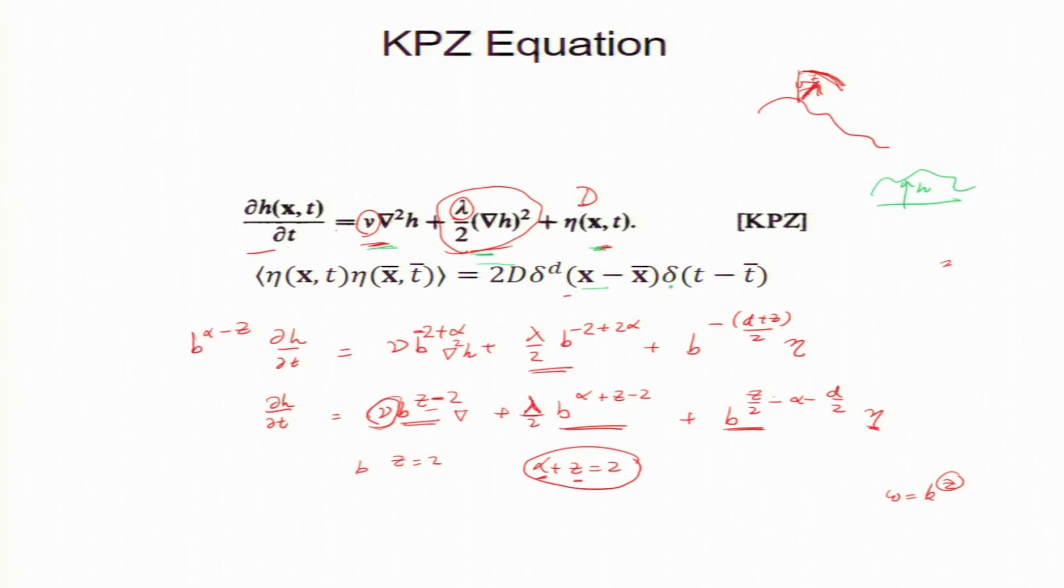Now, we make some transformations. So, x equal to b x prime. So, in fact, I write down the equation for h prime, t prime and so on.